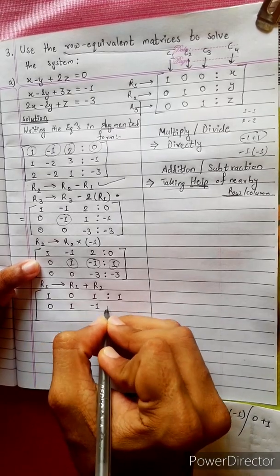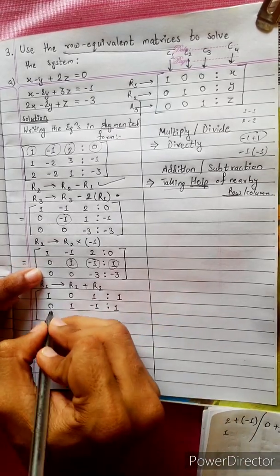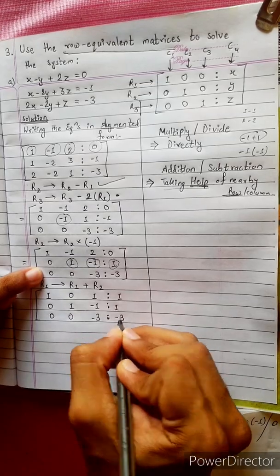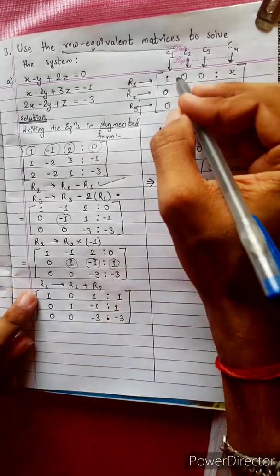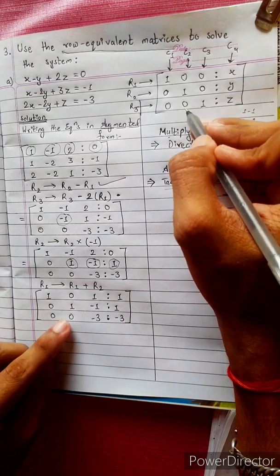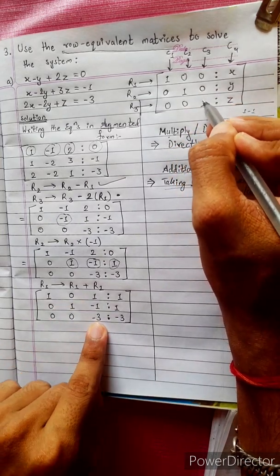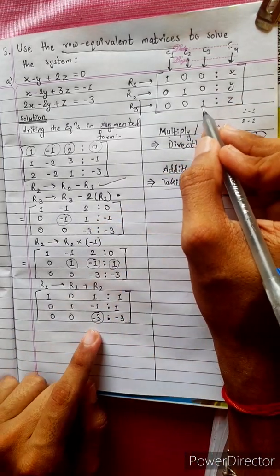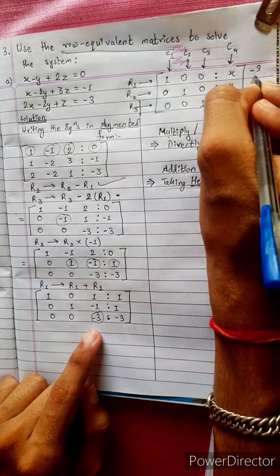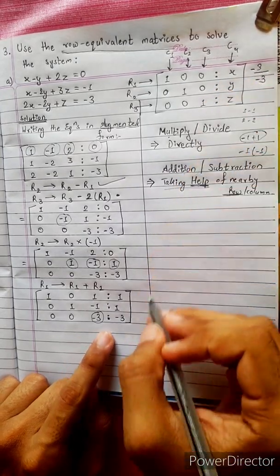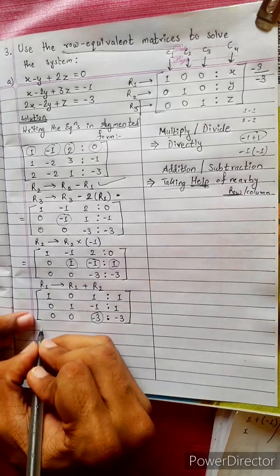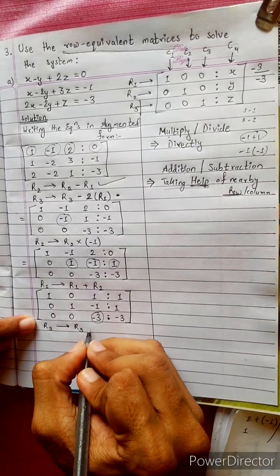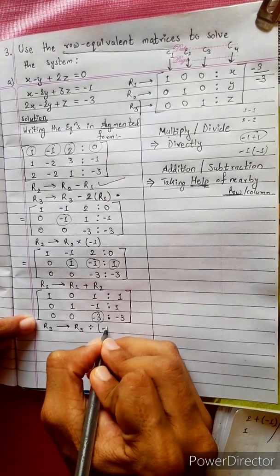The result is 0, 0, -3. Then 2, -3. Now the value is 1, 0, 0, 0, 1, 0. This is -3. This is -3 divided by -3. R3 is changed into R3 divided by -3.